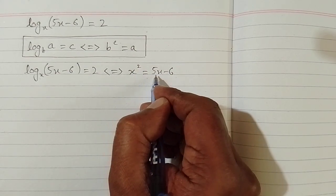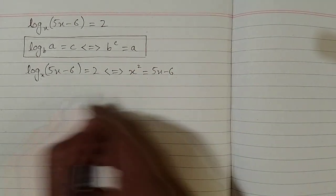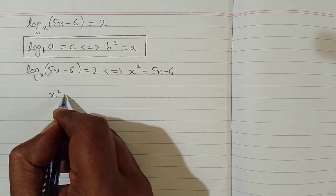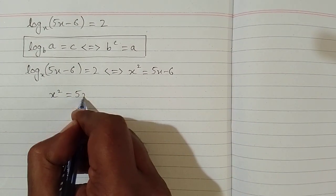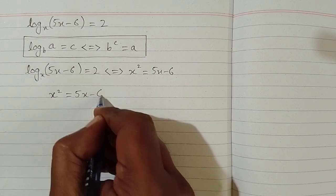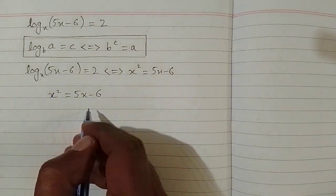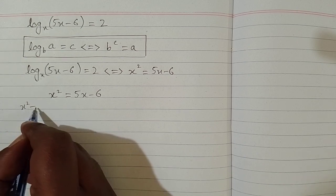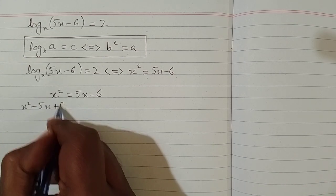So we have x square is equal to 5x minus 6. So we will solve this equation in order to find the solution of the given logarithmic equation. Now this can be written as x square minus 5x plus 6 is equal to 0.